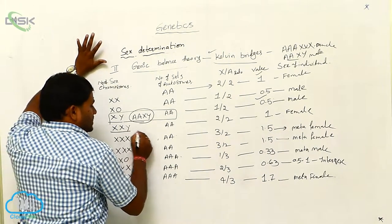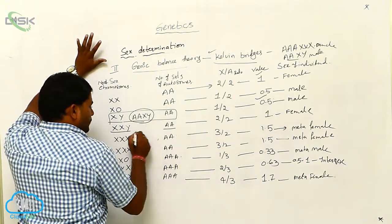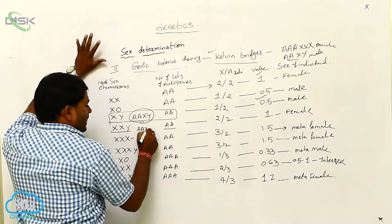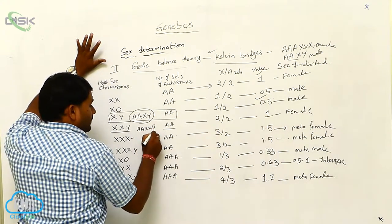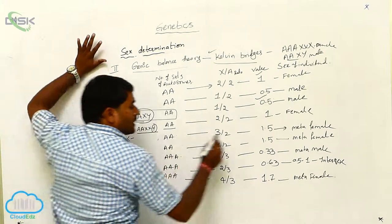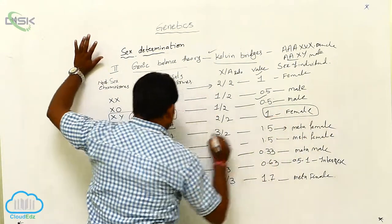If you take XXY, AA. So if you fuse them, what is the ratio? AA, XXY. But if you take AA, XXY is a karyotype, what is the sex of the individual? Female.